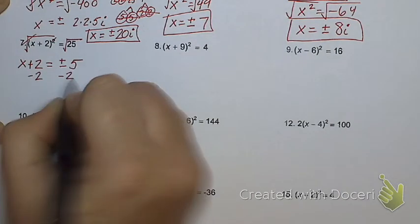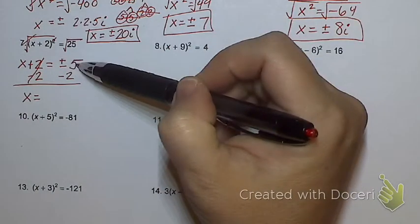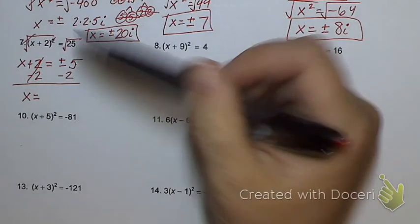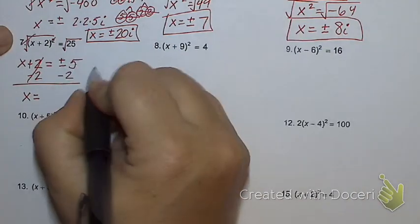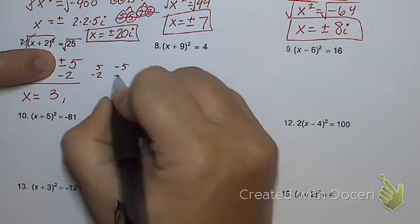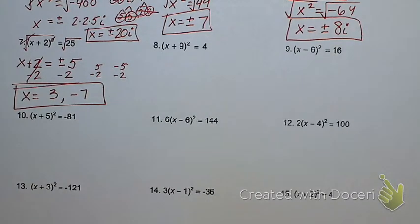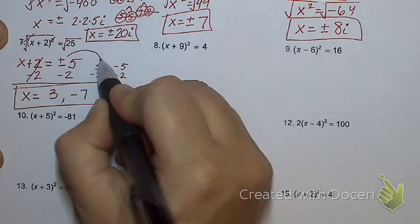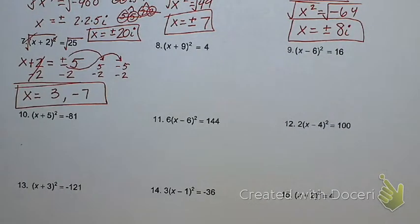Now what? Subtract two, and I have to be a little bit careful here. This is where it gets tricky. Positive five. This is two different numbers, right? So what's positive five minus two? Three. Five minus two, which is three. And what's negative five minus two? Negative seven. So I have to do both the subtractions there because it's actually two numbers. I have to do the positive five, subtract two, and the negative five, subtract two.